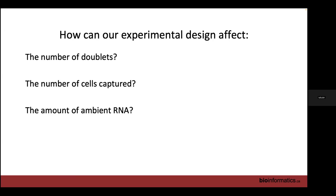We can't always tell from the barcode rank plot whether a secondary hump represents small cells or droplets with a lot of ambient RNA. Instead of the old CellRanger approach of drawing a simple threshold, we use the new version based on emptyDrops. The droplets with very few UMIs are definitely not cells, so we use those to estimate what the ambient RNA profile looks like. Then we ask: is the expression profile in each droplet statistically significantly different from the ambient RNA? If it is, it's probably a cell. I am an author on the emptyDrops paper.